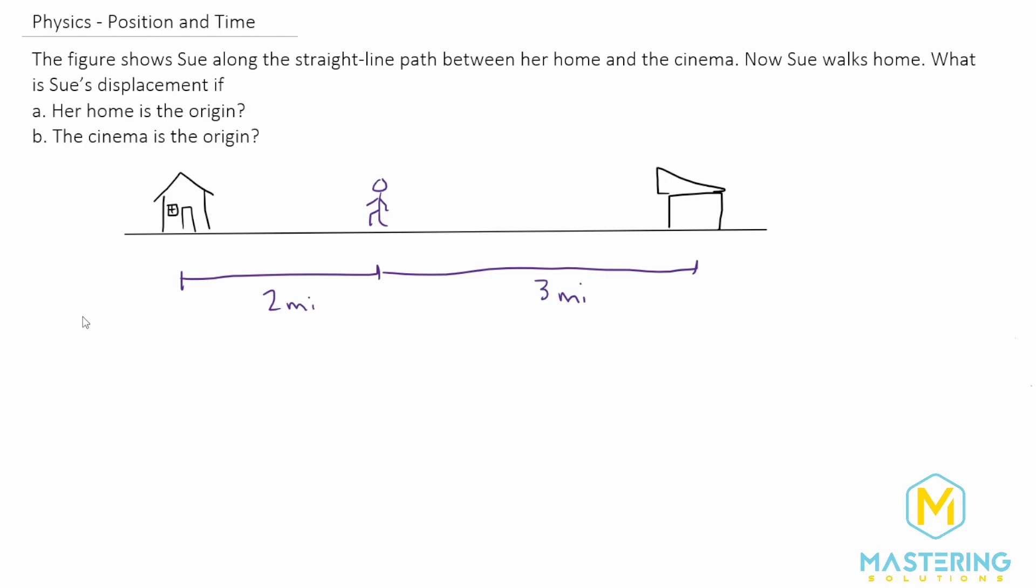In this one they want to know what Sue's displacement is if her home is the origin or if the cinema is the origin. Now in the last problem we found that depending on where you set the origin, her position will change because it's in relation to the origin. With displacement, it's different however.